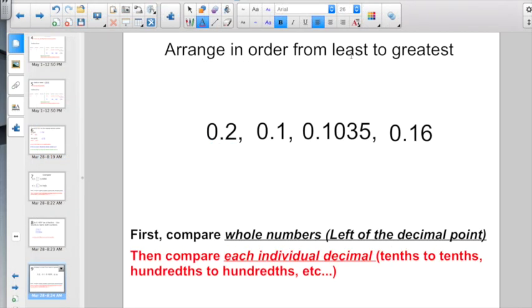All right, arrange these in order from least to greatest, from the smallest to the biggest. Remember, first compare the whole numbers on the left side of the decimal point, and then we're going to compare each individual decimal. So I have 2 tenths, 1 tenth, 1,035 ten-thousandths, and 1,600ths. Right now I have a zero in each of the whole number places. So let's go and look at what would be the smallest. Here I have 2 in the tenths place, 1 in the tenths place, 1 in the tenths place, and 1 in the tenths place. Let's go and move on to the hundredths. Here I have nothing in the hundredths, 0 in the hundredths, and 6 in the hundredths.